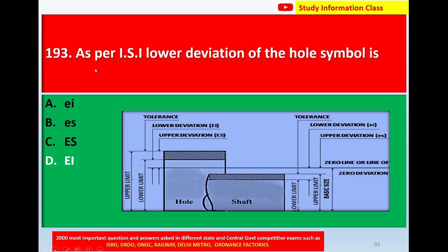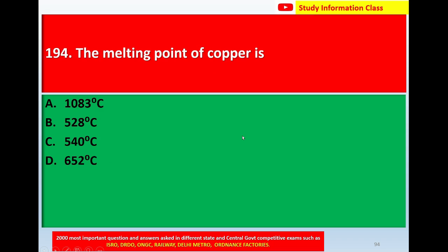So as per question number 193, as per ISI, the lower deviation of the hole symbol is EI — this is EI, lower deviation. Next, question number 194: the melting point of copper is 1083 degrees Celsius. Option A: 1083 degrees Celsius. Option B: 528 degrees Celsius. Option C: 540 degrees Celsius. Option D: 652 degrees Celsius.